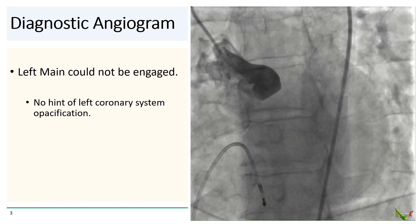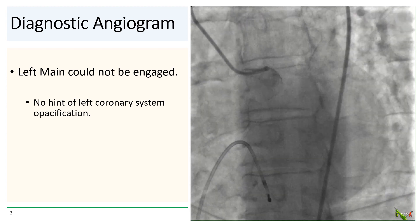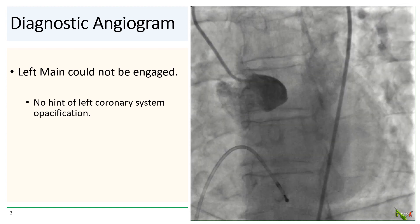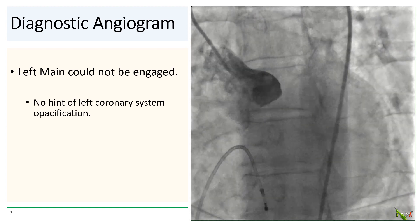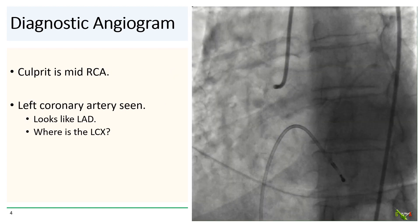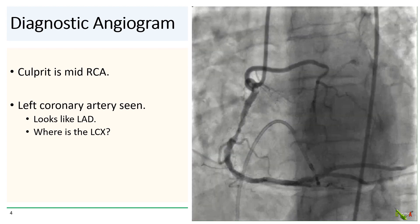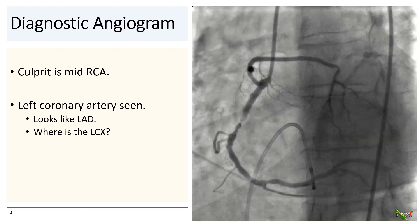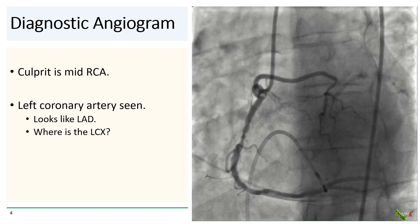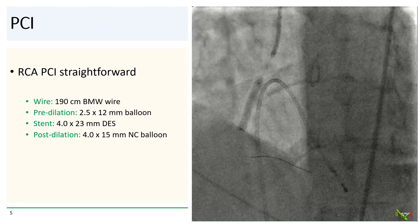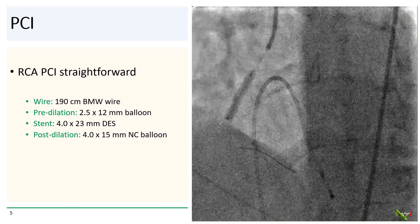We inserted a temporary transvenous pacing catheter from the right femoral vein and then attempted to engage the left coronary system. However, the left main could not be engaged, and there was no opacification of the left coronary system with the non-selective injection. We engaged the right with a 6-French JR4 guiding catheter. The culprit is clearly the lesion in the mid-RCA. An anomalous left coronary artery is seen, and it looks like it's the LAD, but we still could not see the left circumflex.